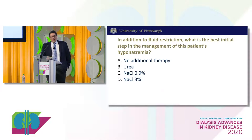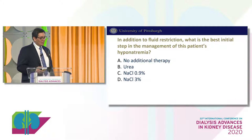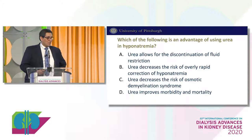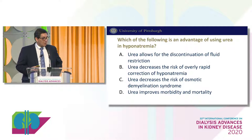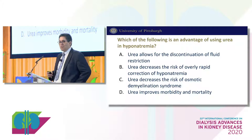Based on this presentation, the question for the audience is: in addition to fluid restriction, what is the best next step in the management of this patient's hyponatremia? Options are: no additional therapy, urea, normal saline, or hypertonic saline. The second question is: which of the following is an advantage of using urea for hyponatremia? Choices include: urea allows discontinuation of fluid restriction; urea decreases the risk of overly rapid correction; urea decreases the risk of osmotic demyelination syndrome; or urea improves morbidity and mortality. We'll review these questions at the end of the talk.